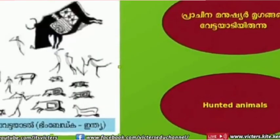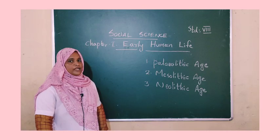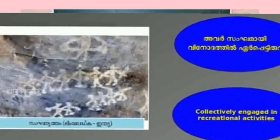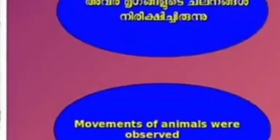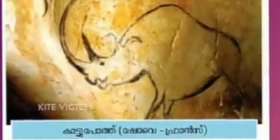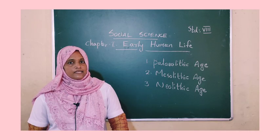Let us examine each one of them. First, there is a picture of hunting — it means hunting was their main occupation or main livelihood. Second, it is a picture of group dance, meaning they were engaged in recreational activities. Third, it is a picture of an animal, meaning they observed the movements of animals. Fourth, it is a colour picture — it means they used different colours, which were made from a mixture of plant extract and laterite powder.